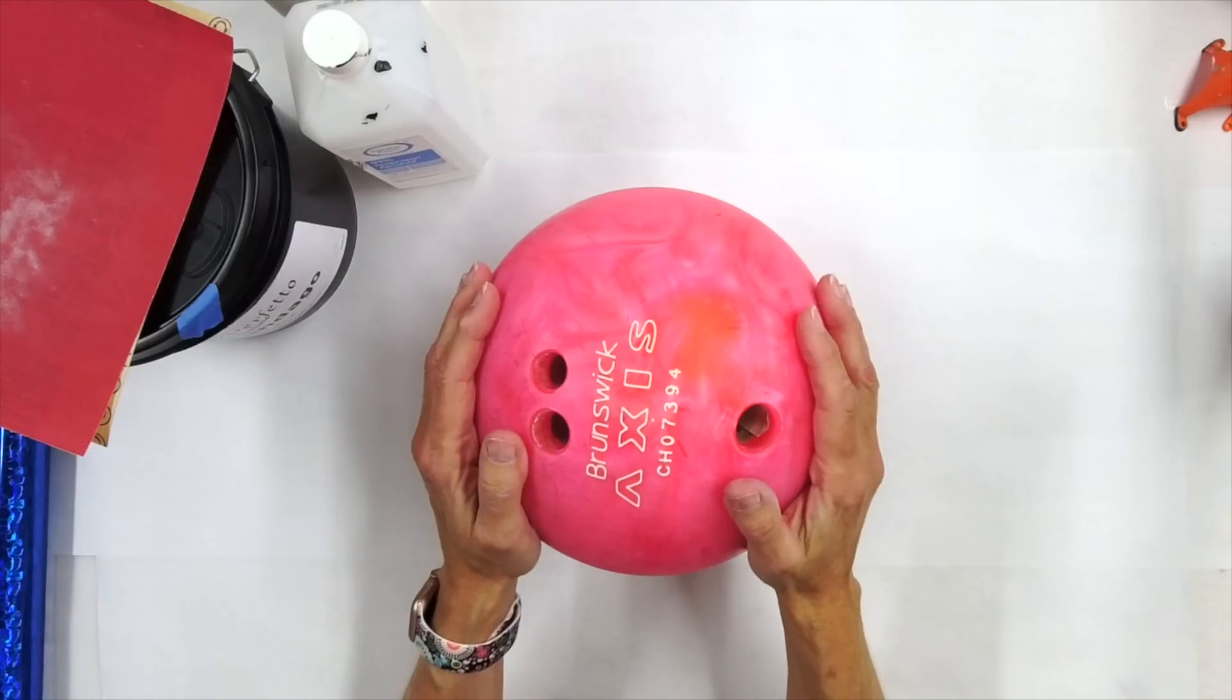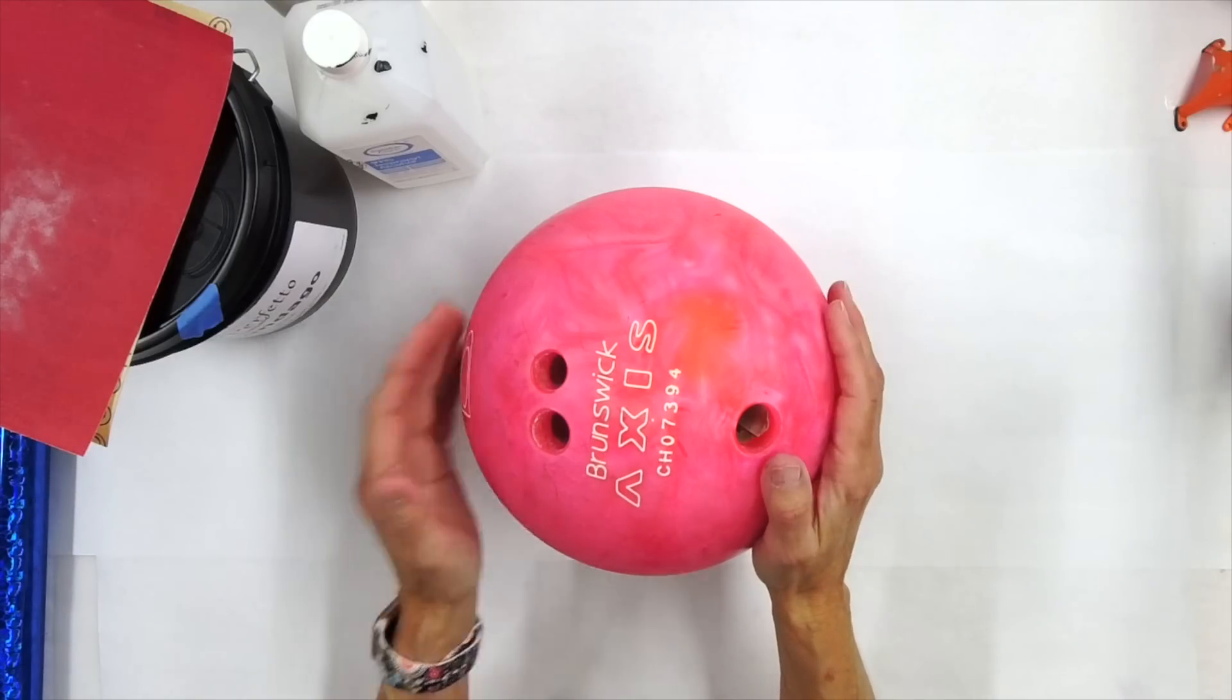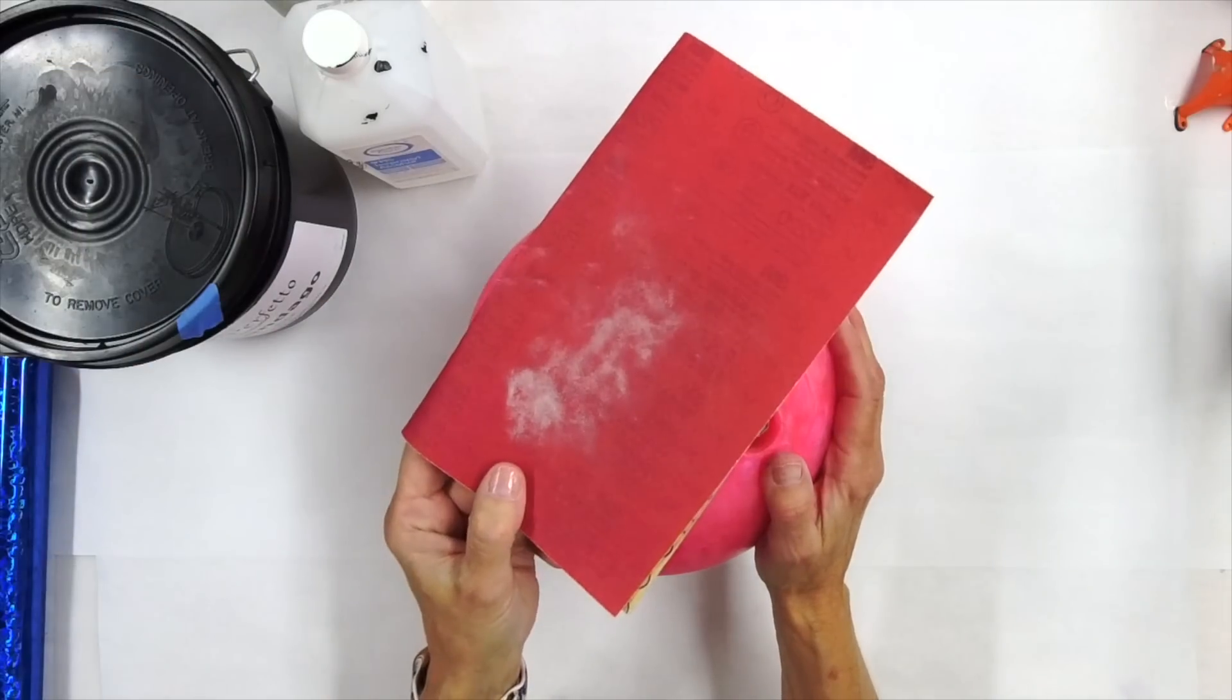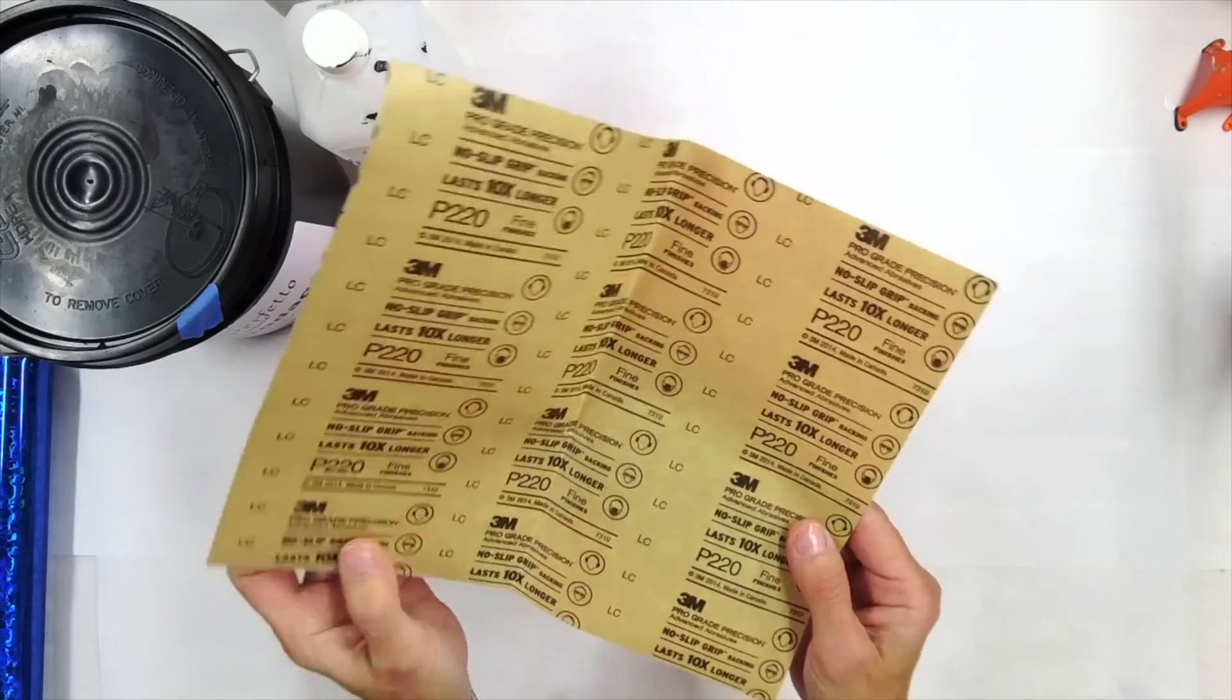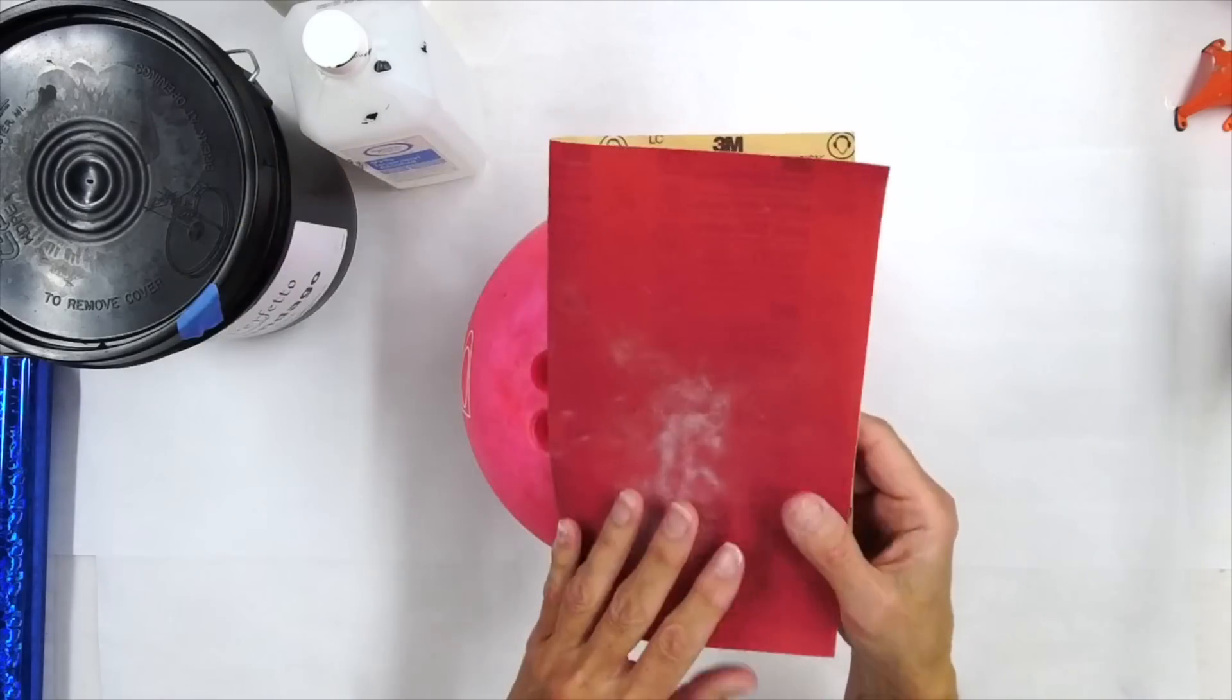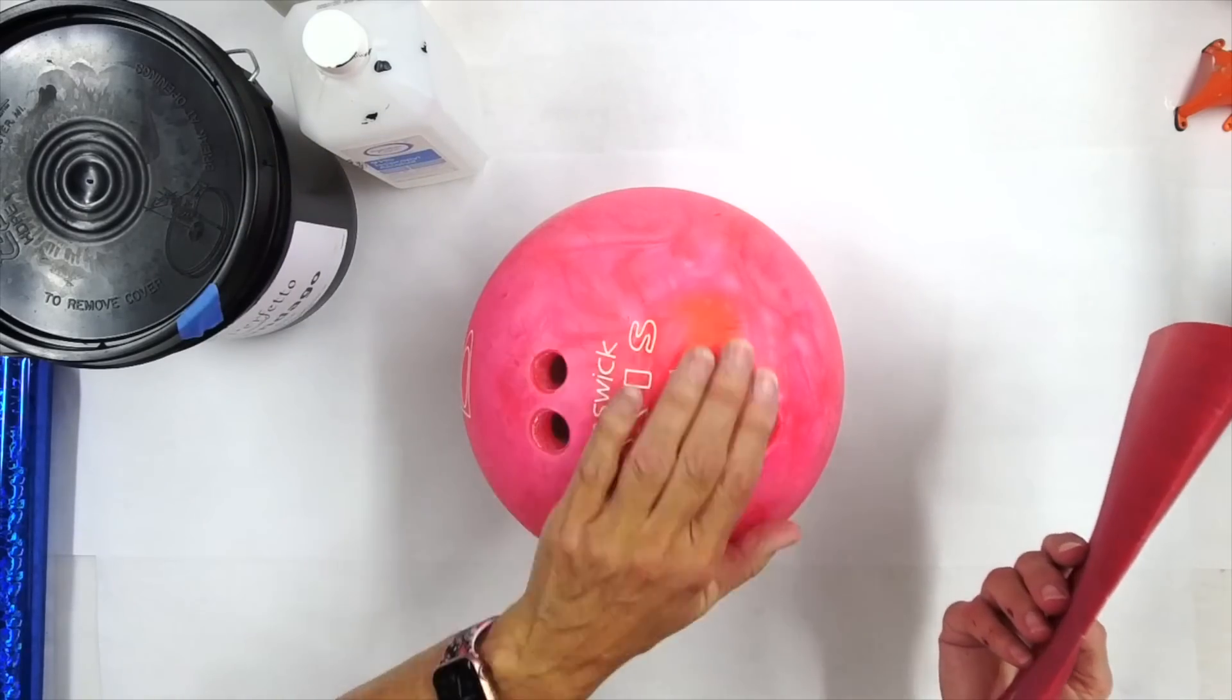So to begin with, I just grabbed this bowling ball. We did go outside because I don't like really sanding in my studio. I used 220 grit sandpaper and gave it a really good sand.